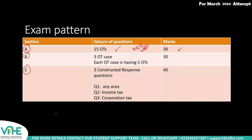For example, in a multiple response question you may be given six to eight options where two to three are correct. If you select one correct option but miss the other, your answer is partially correct — you will not receive partial credit. You must give a completely correct answer to score the full two marks, or you score nothing. Fortunately, there is no concept of negative marking.